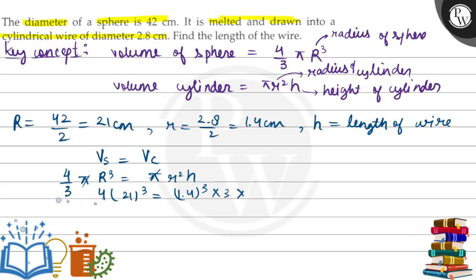From here, we will find the value of h. So we'll get 37044 equals 1.96 times 3 times h.